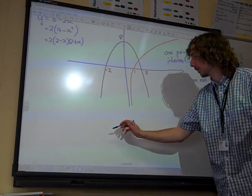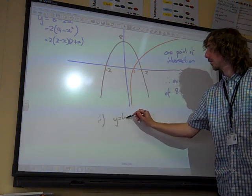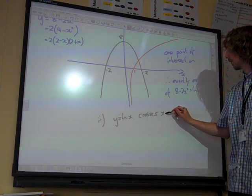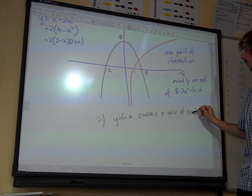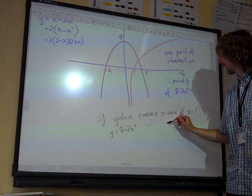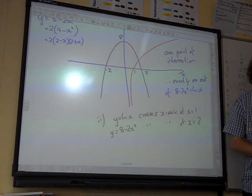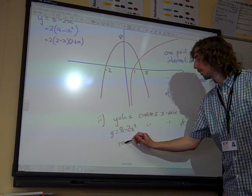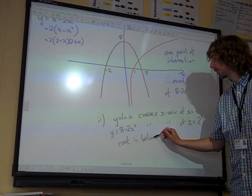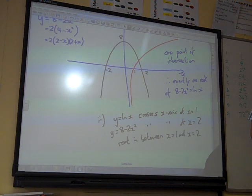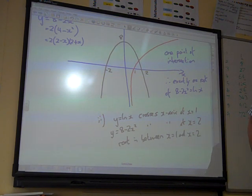ln x crosses at 1. And y equals 8 minus 2x squared crosses the x-axis at x equals 2, and the root is between those two points. I think a good enough diagram there is enough to show that the intersection is where we want it to be. Okay.